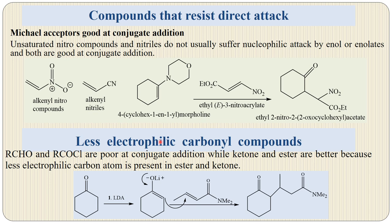There are some less electrophilic carbonyl compounds. Aldehydes and acid chlorides are poor at conjugate addition, while ketones and esters are better because less electrophilic carbon atoms are present in esters and ketones. Here, cyclohexanone in the presence of LDA (lithium diisopropylamide) as a strong hindered base forms a lithium enolate, which undergoes conjugate addition to give the product.